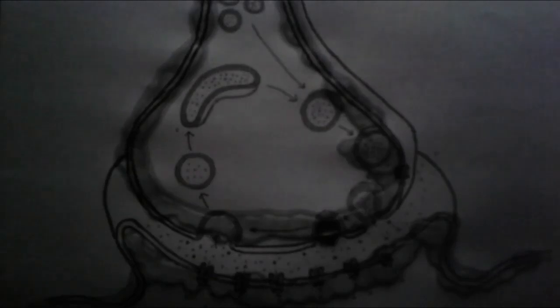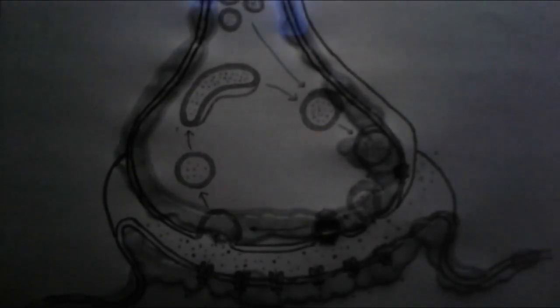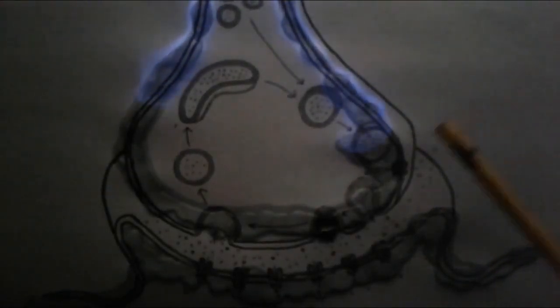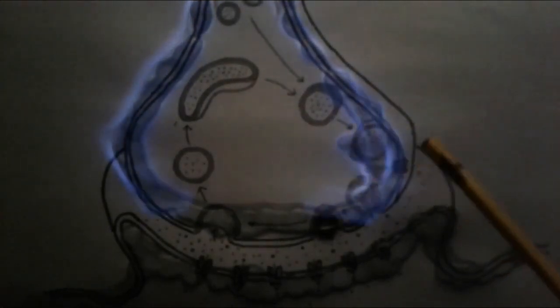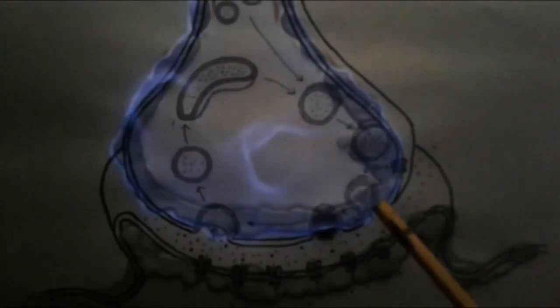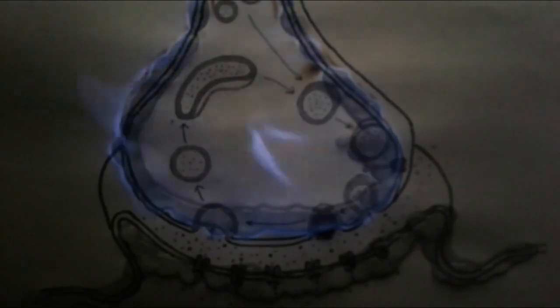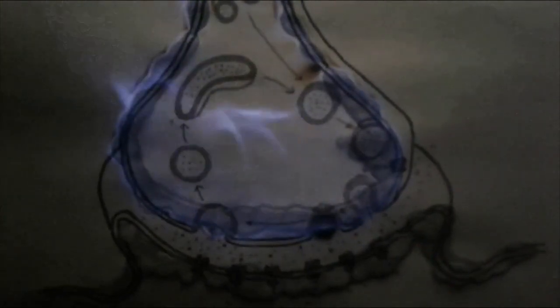When an action potential occurs at the pre-synaptic neuron, ion channels open that allow calcium to enter the cell. This calcium binds to synaptotagmin, which causes snare complexes to form, which in turn causes membrane fusion and the release of the neurotransmitter, known as exocytosis.